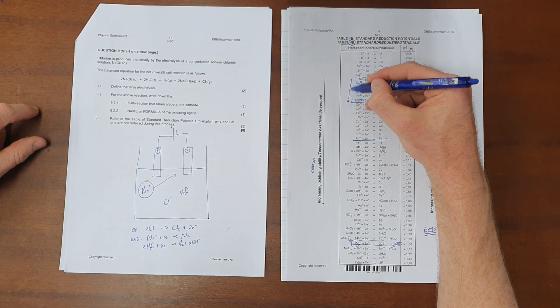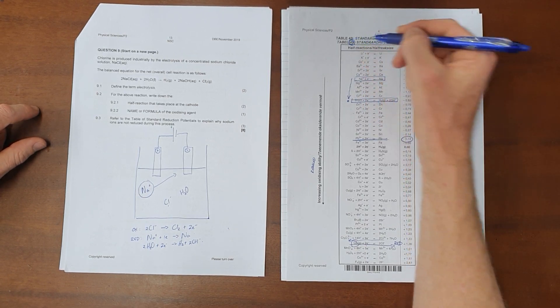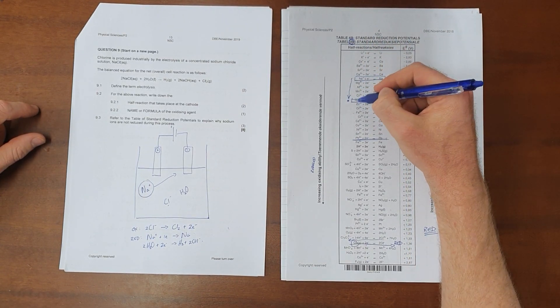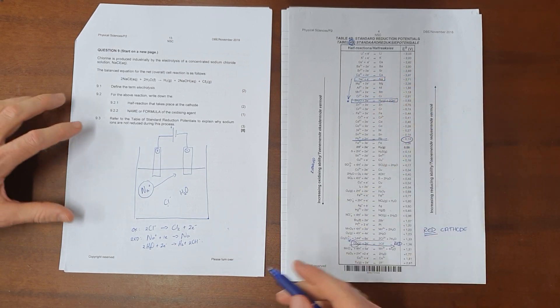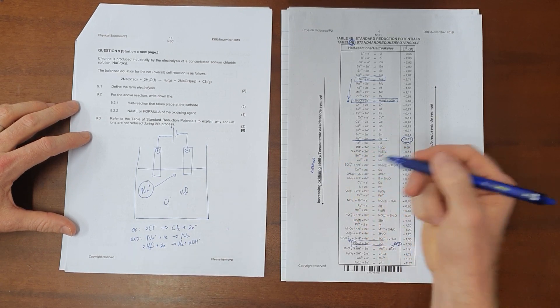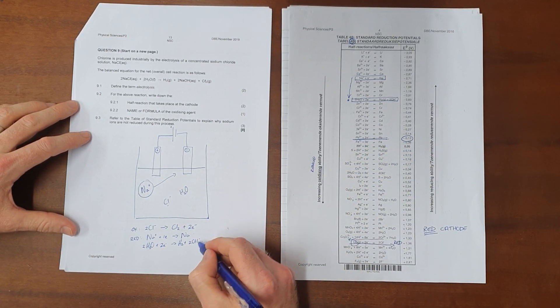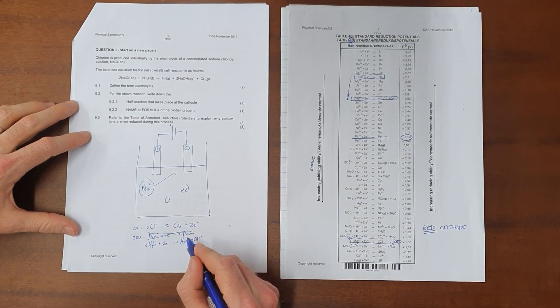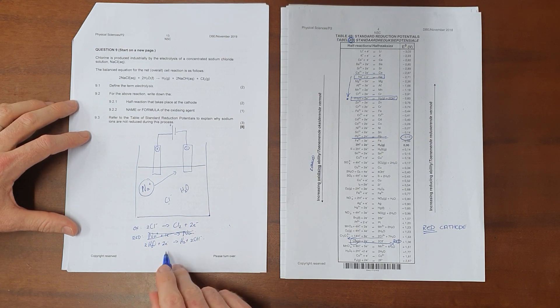Since water is below sodium on table 4b, water is more likely to be reduced or more likely to be the oxidizing agent, and as a result we say that the reduction half reaction is going to be the reduction of water.